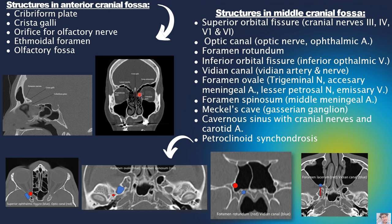On sagittal and coronal CT sections of the anterior cranial fossa, we can see the cribriform plate, crista galli, and olfactory nerve, which are better appreciated on MRI. On axial section, the optic canal is shown in red and the superior orbital fissure in blue. The optic canal transmits the ophthalmic artery and optic nerve.